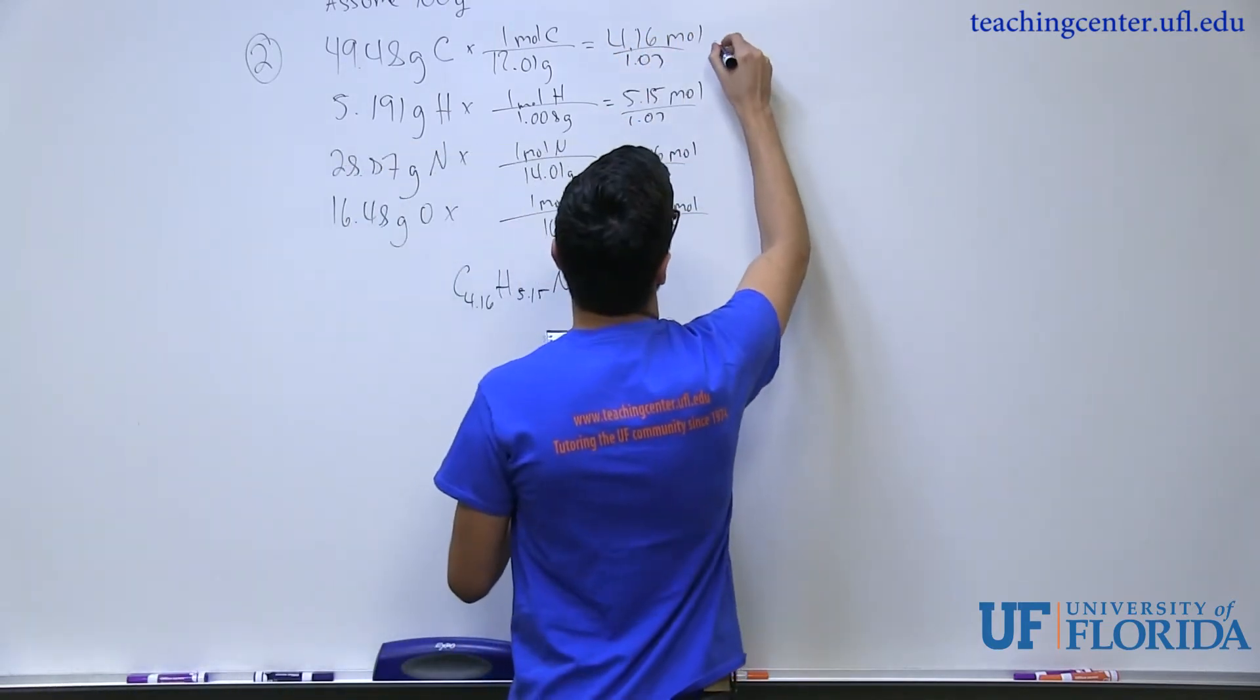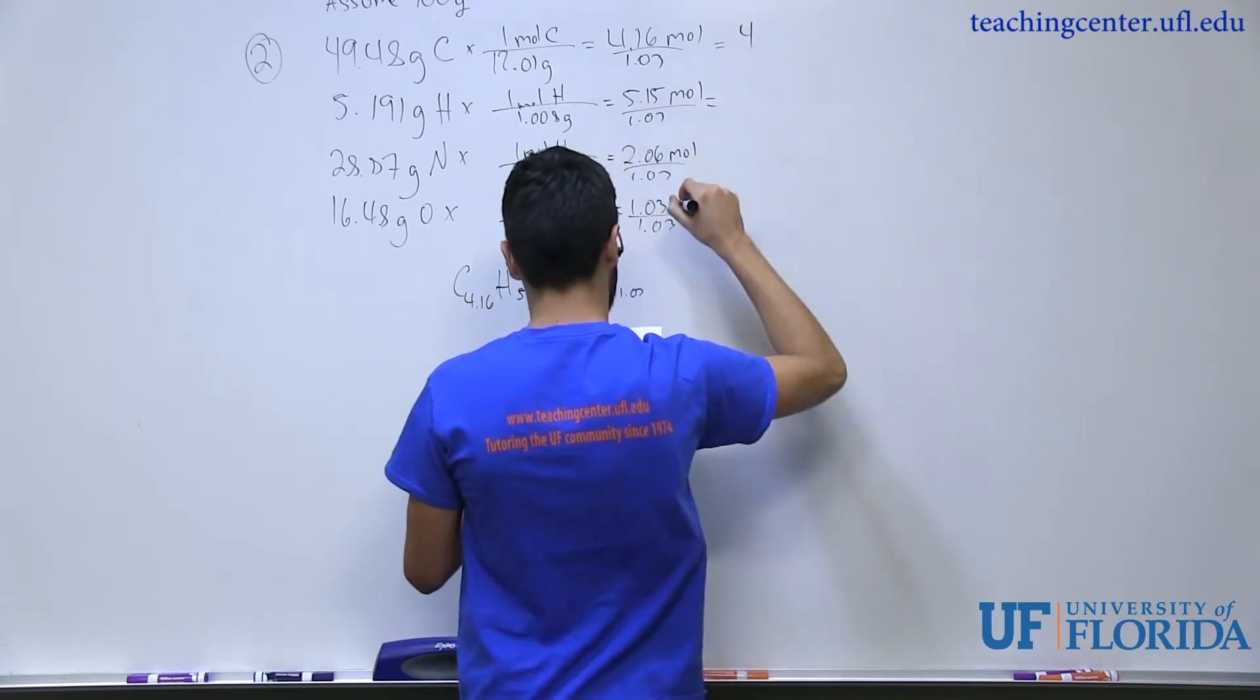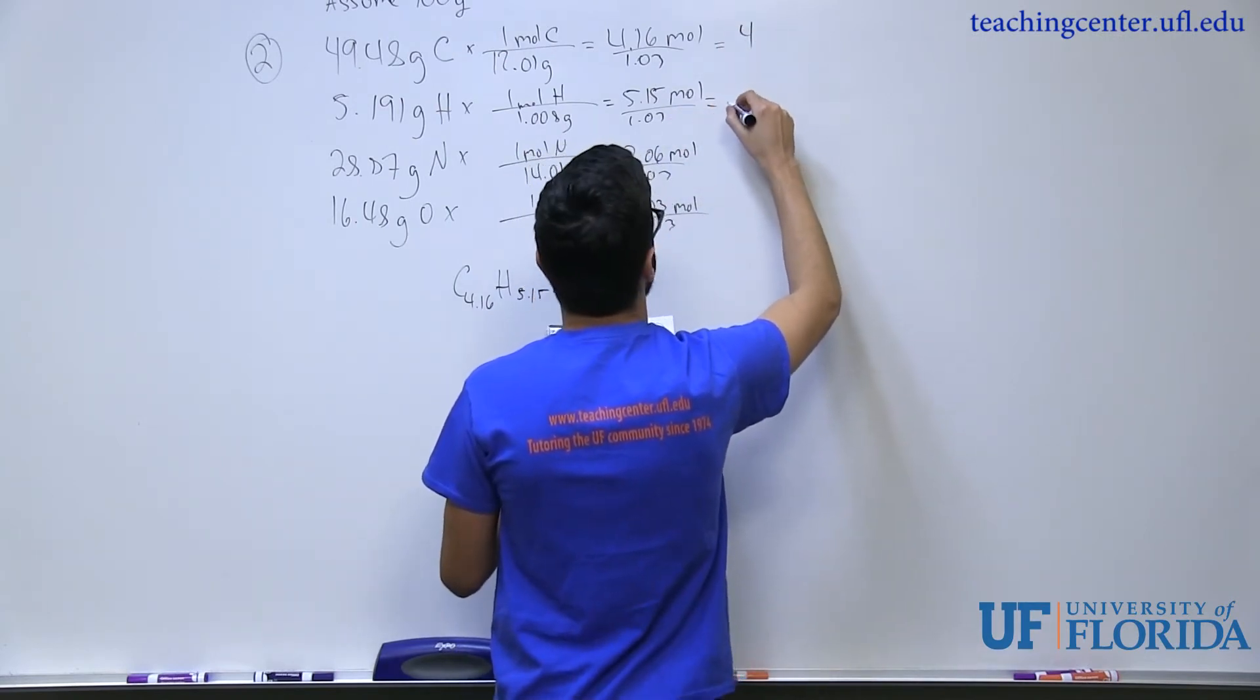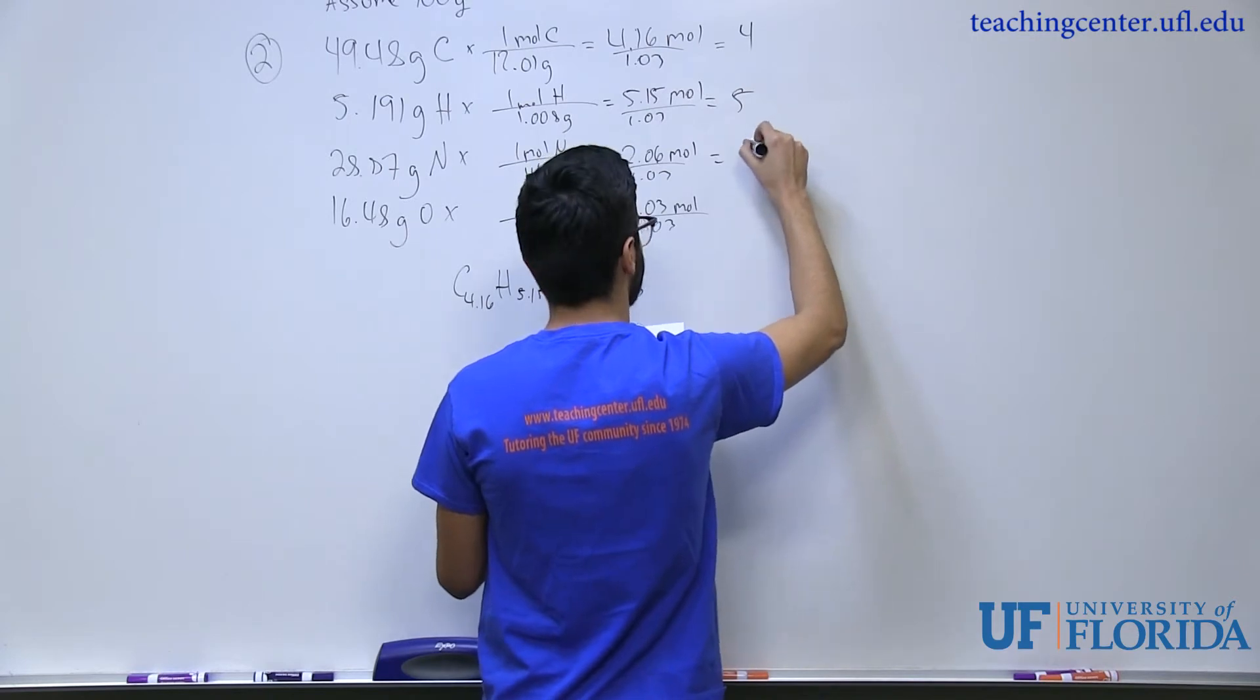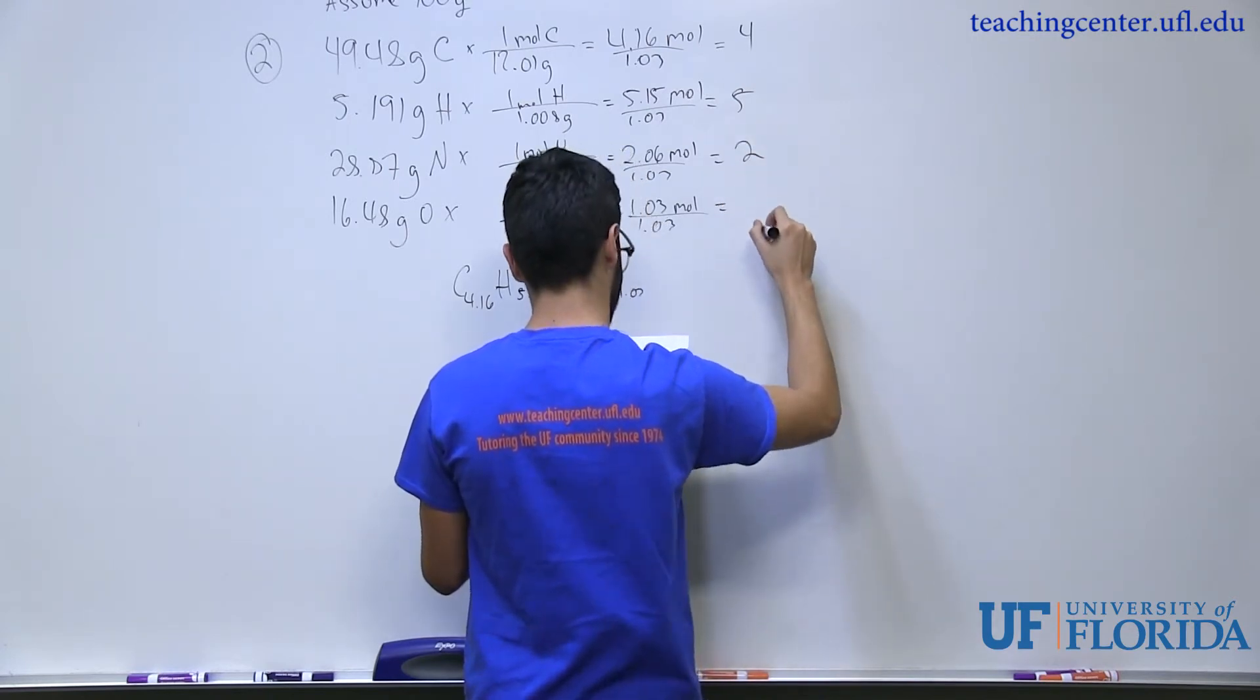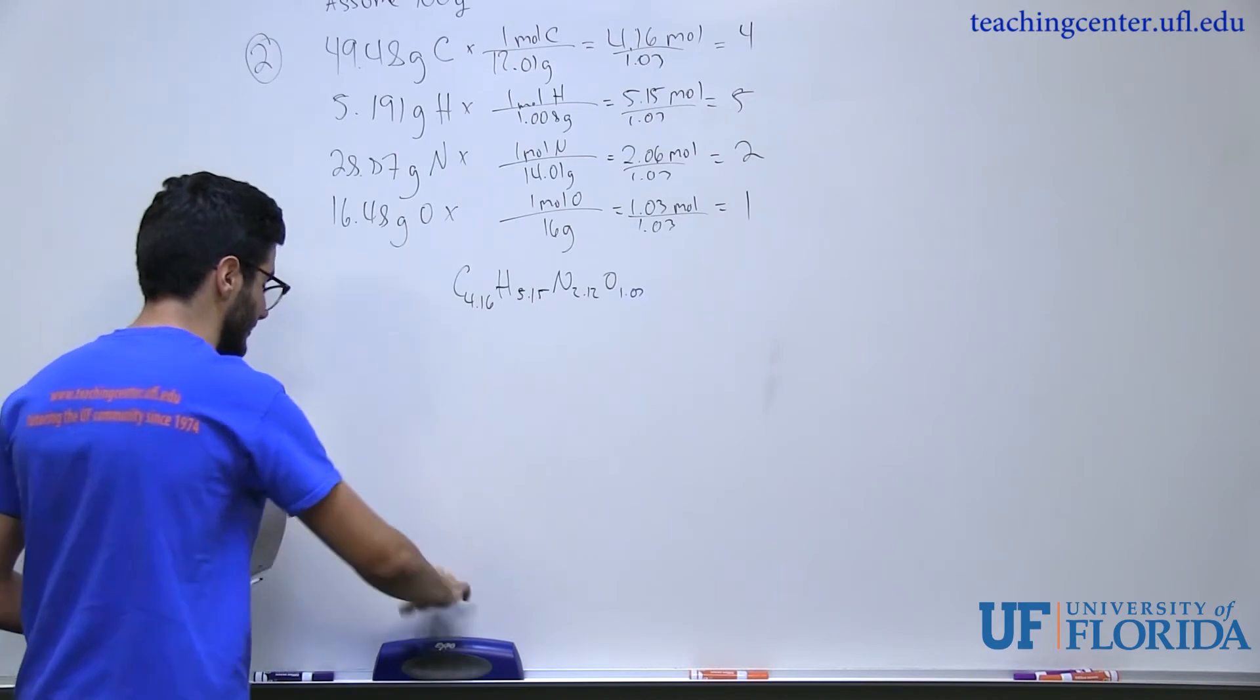On top here, I'll get 4. For hydrogen, I'll get 5. For nitrogen, I'll get 2. And for oxygen, I'll get 1. Now that looks a little bit better.